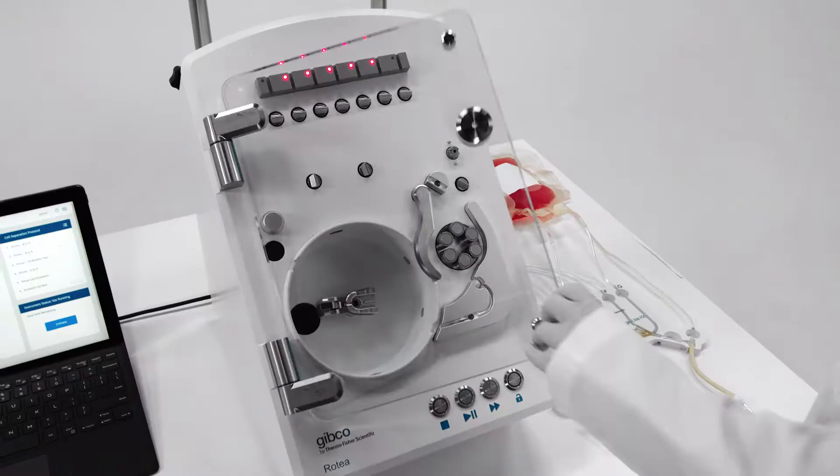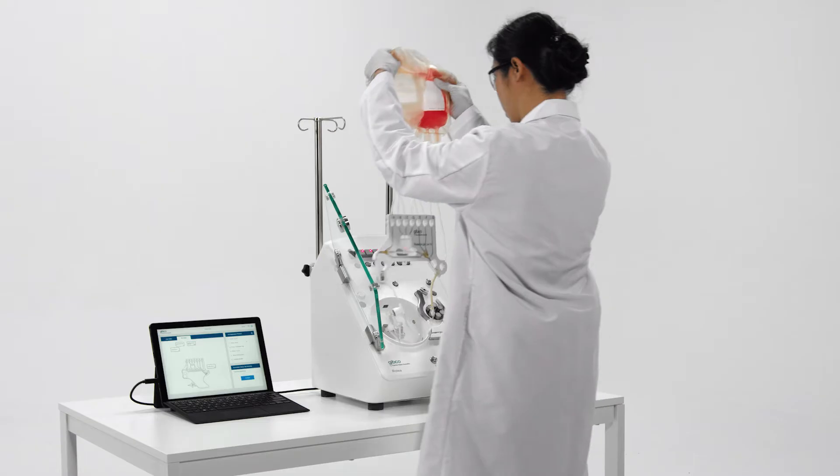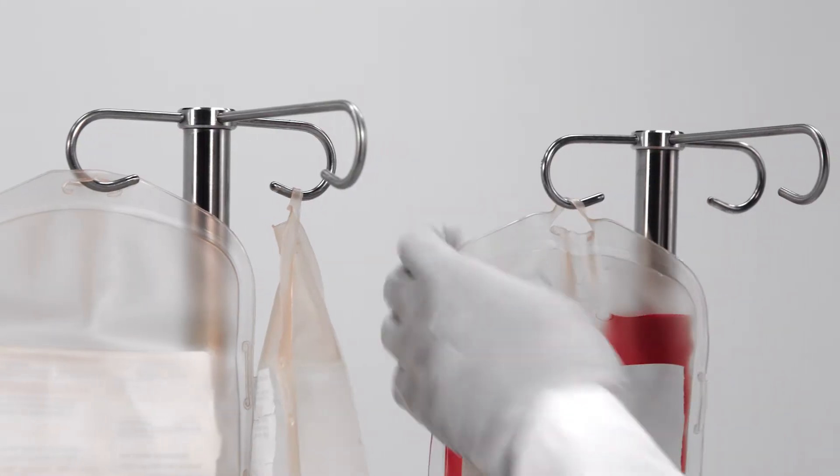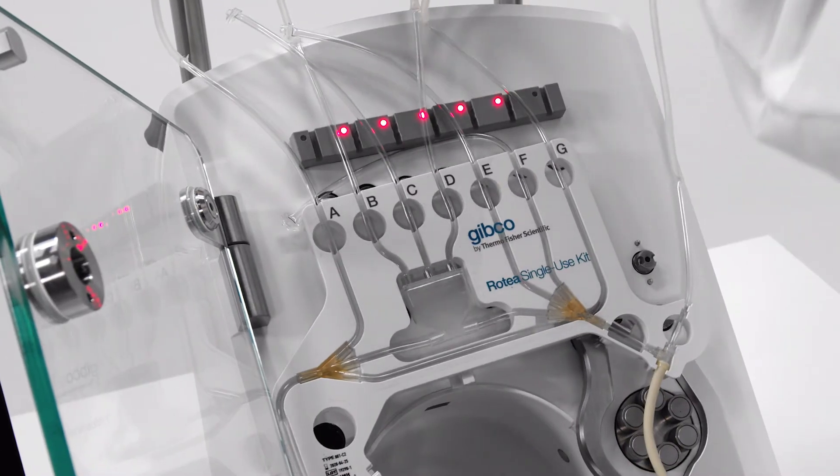Third, load the single-use kit. Start by hanging the bags in an order that best lines them up with the tube ports on the bubble sensor strip.